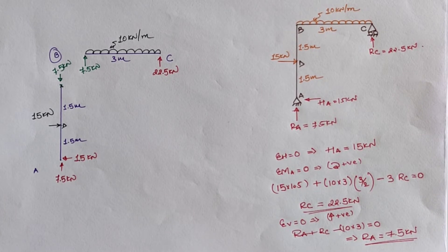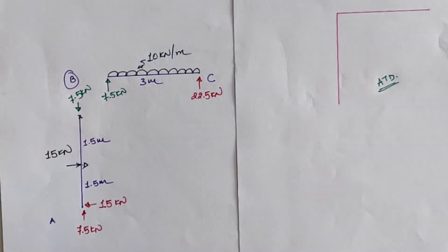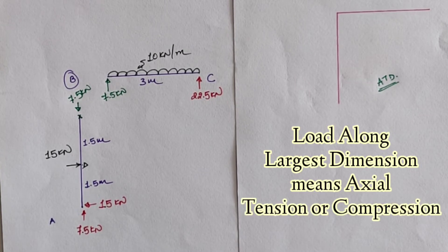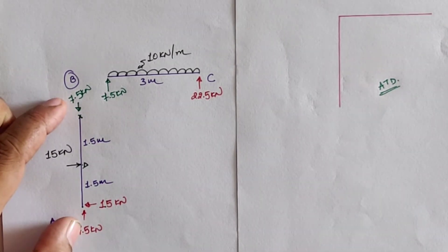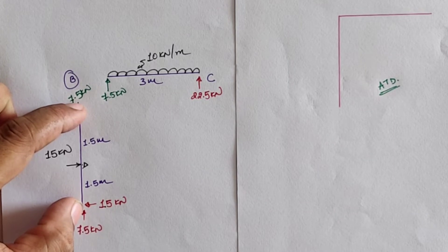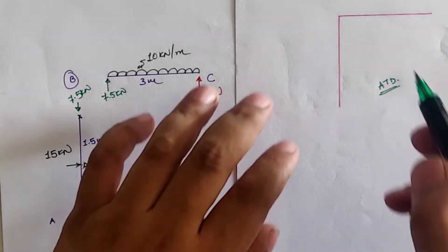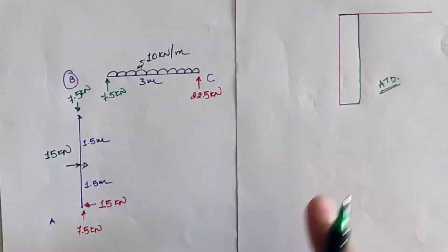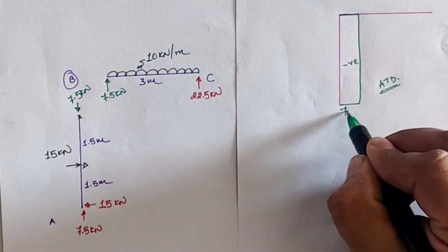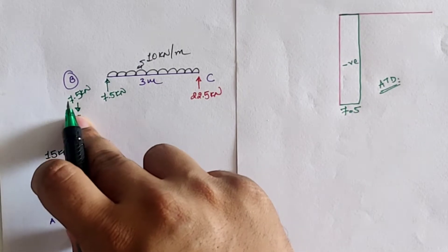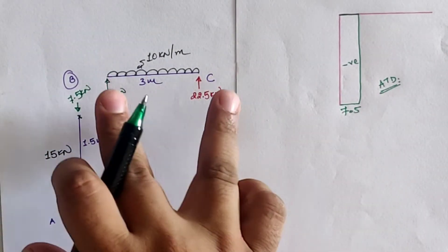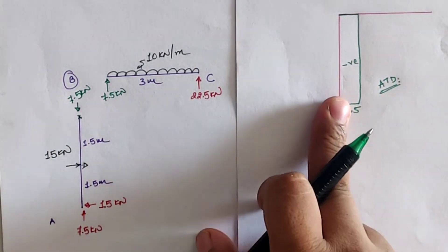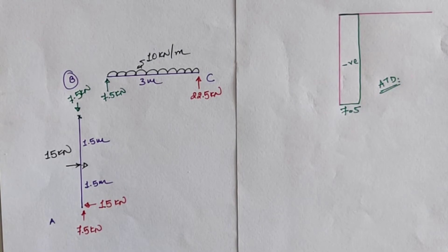Now let us draw the axial thrust and shear force diagrams. For the axial thrust, the load along the largest dimension of member AB is 7.5 kilonewton compressive, so we draw a compressive (negative direction) diagram of value 7.5 kilonewton for member AB. For member BC, there is no horizontal load along its largest dimension, so the axial thrust diagram for BC is zero.